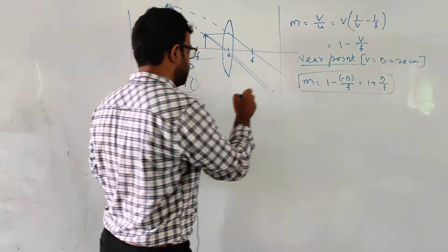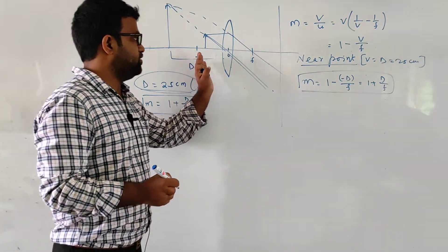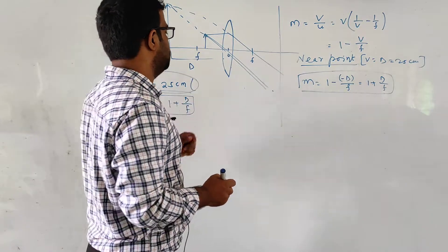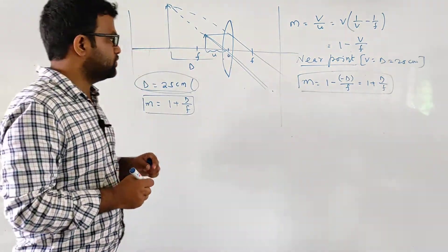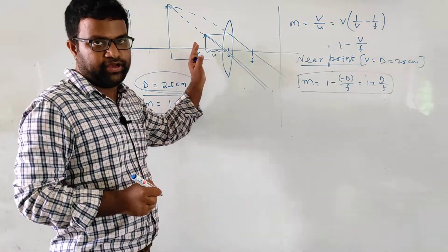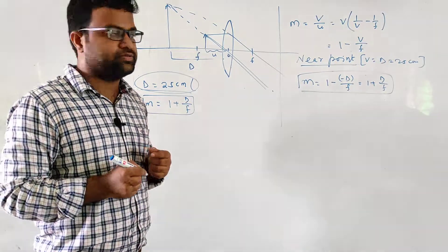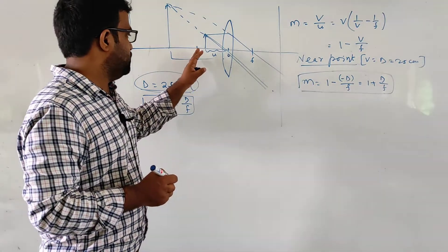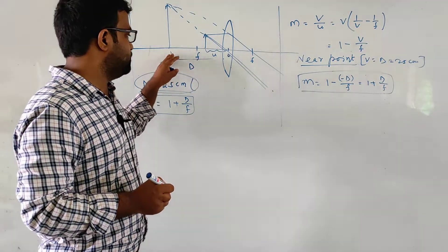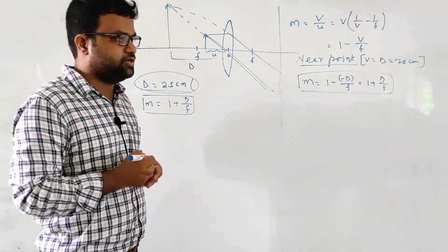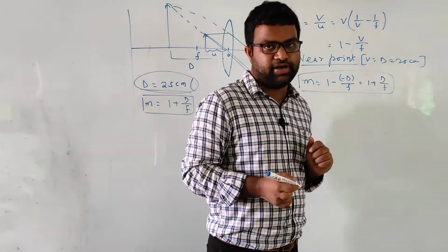This is the proof of the first expression. When the object is kept at a distance u, which is between the optical center O and the focus f, we adjust the object so that the image is produced at d, 25 centimeters. The magnification in this case is 1 plus d by f.